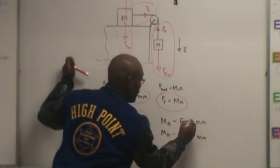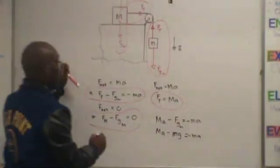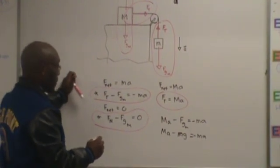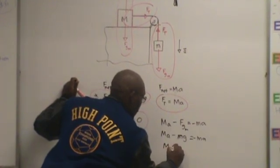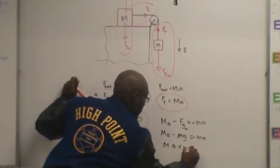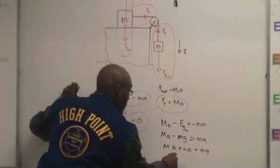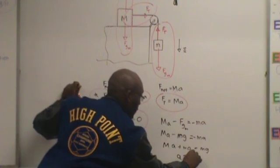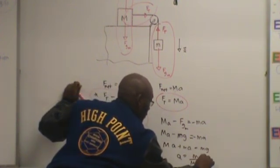I should have a negative there and a negative there. So now, that's going to give me Ma plus lowercase ma equals mg. Now we factor out the a and that's going to give us a equals mg over M plus lowercase m.